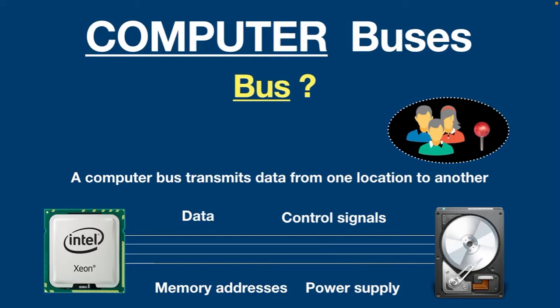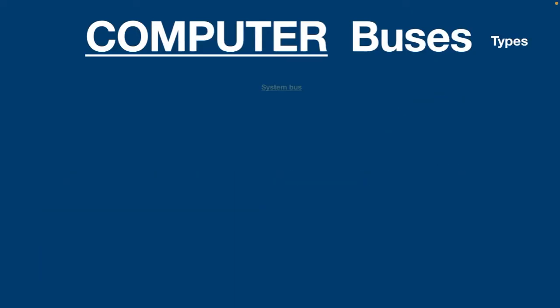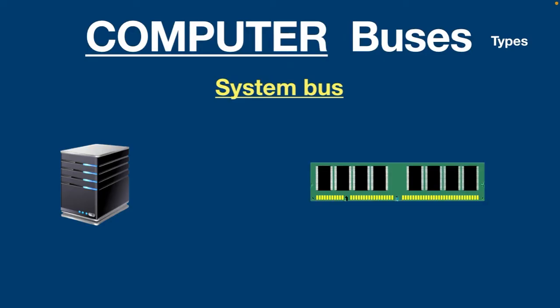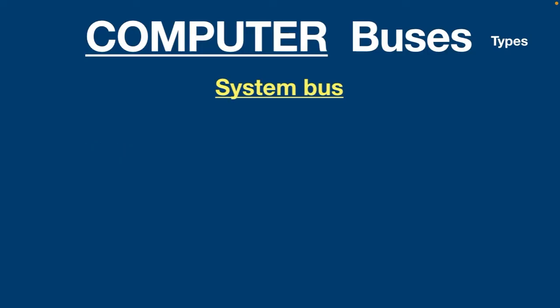Now let's discuss the types of computer buses. System bus — it connects the CPU and the main memory. The system bus is also known as a memory bus. There are three types of system buses: the data bus, address bus, and control bus.